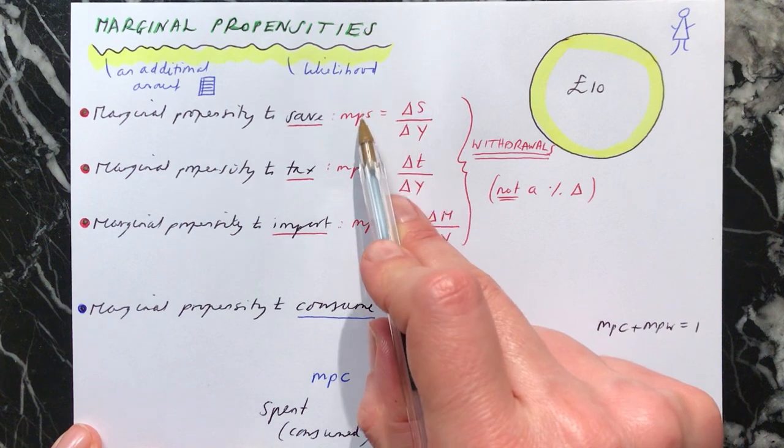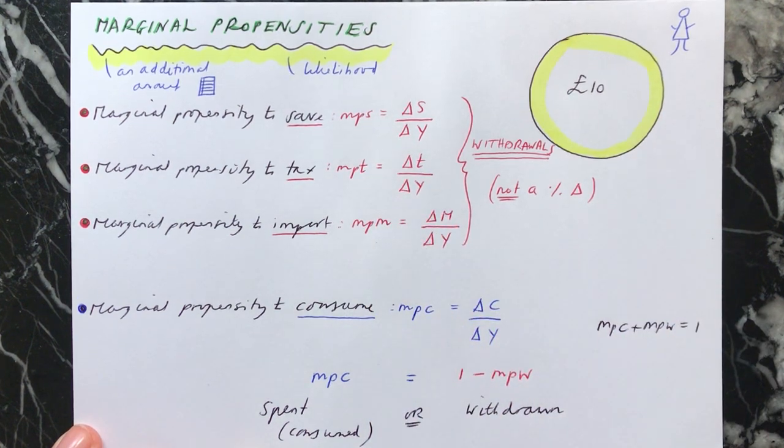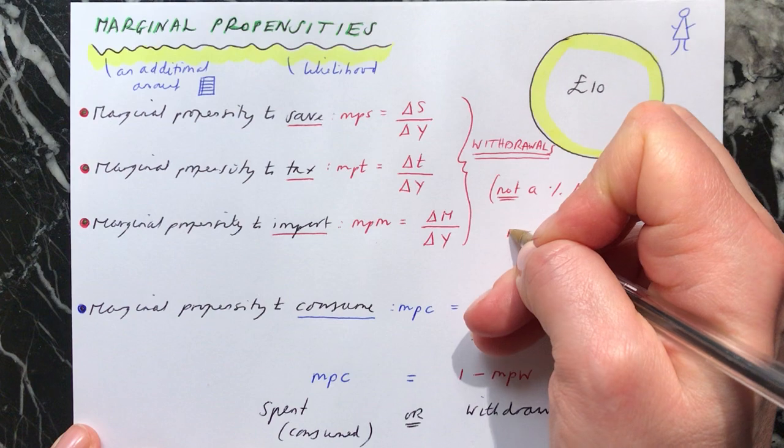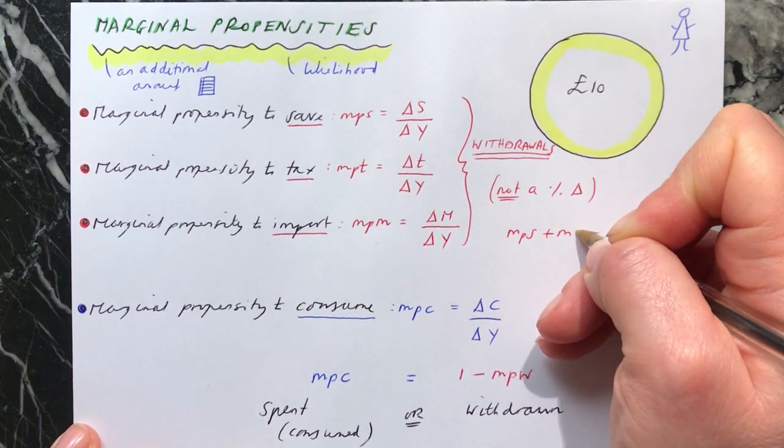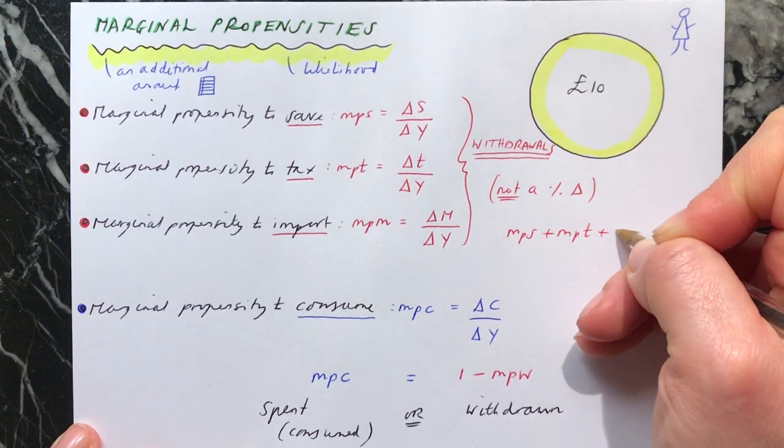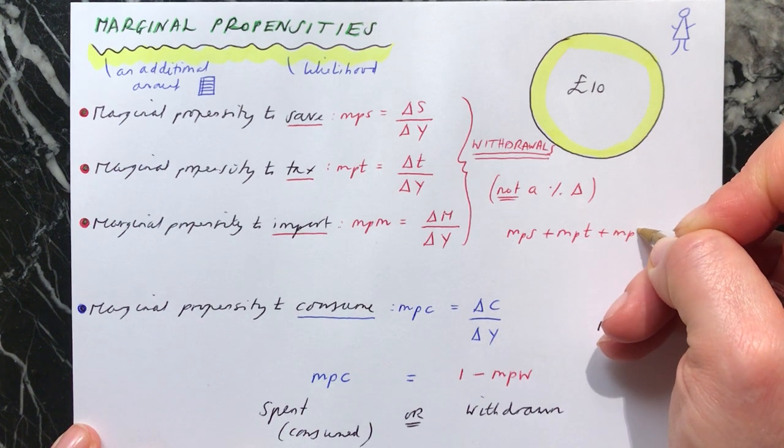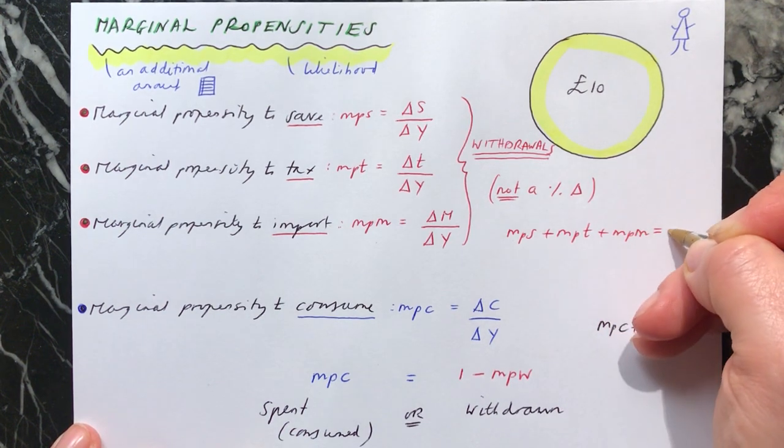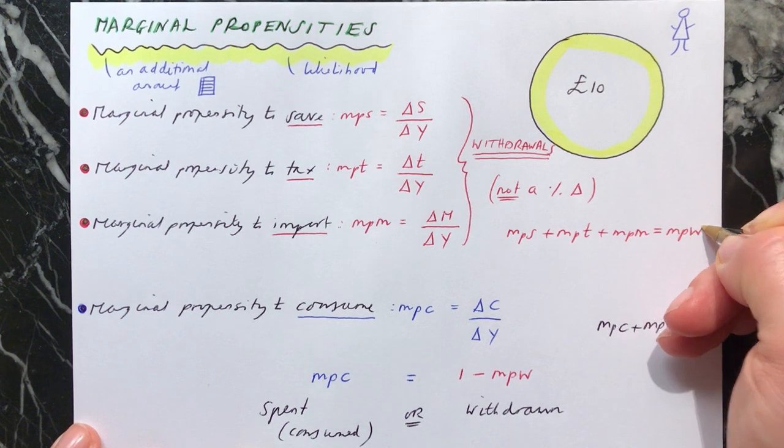Because all these are showing you is out of your additional income, what proportion of it goes on saving, tax, imports, consumption. So therefore, these proportions, the marginal propensity to consume plus the marginal propensity to withdraw must equal 1. The final thing to say here, I think you will have realized already, is that the marginal propensity to save plus the marginal propensity to tax plus the marginal propensity to import equal the marginal propensity to withdraw.